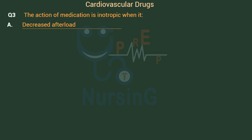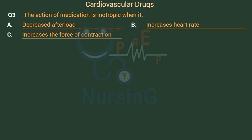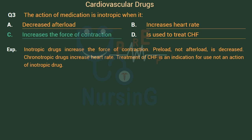The action of a medication is inotropic when it: Option A: Decreases afterload. Option B: Increases heart rate. Option C: Increases the force of contraction. Option D: Is used to treat CHF. The right answer is Option C: Increases the force of contraction. Inotropic drugs increase the force of contraction.